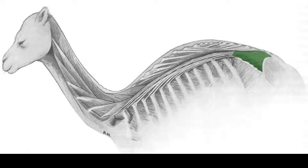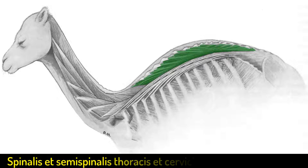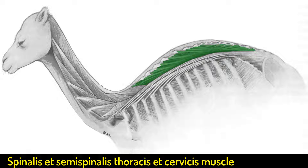I would like to mention that the lumbar part of the longissimus muscle and the iliocostal muscles are fused together in the camel. This highlighted muscle is actually two muscles — the spinal and semispinal muscles — found in two different regions: the thoracic and the cervical. In the thoracic region, the spinal muscle arises from the spinous processes of the first four lumbar vertebrae.